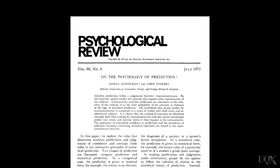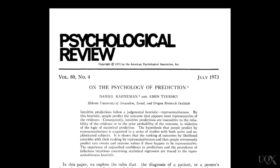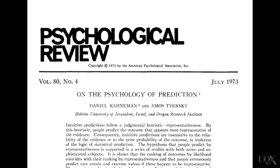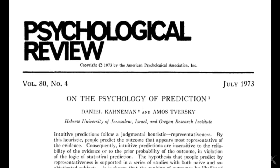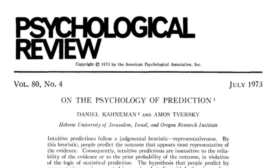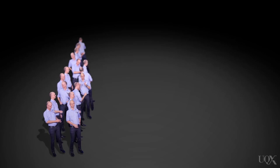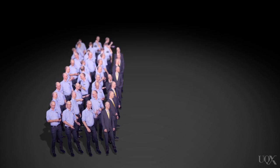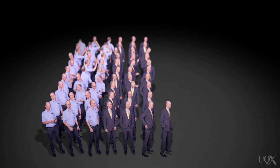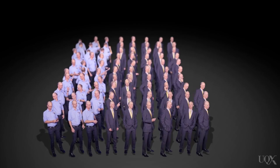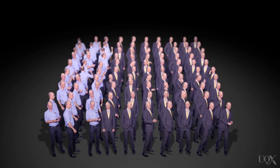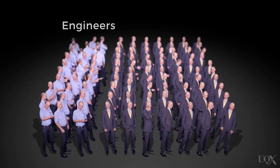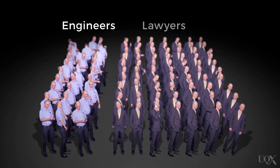Let's try an example from a study by Kahneman and Tversky in 1973. Imagine that there's a really hip and happening party going on. At this party there are 30 engineers and 70 lawyers.